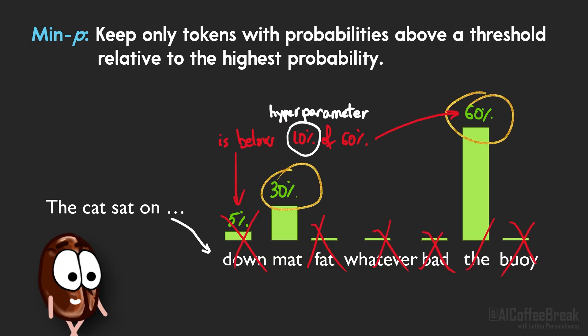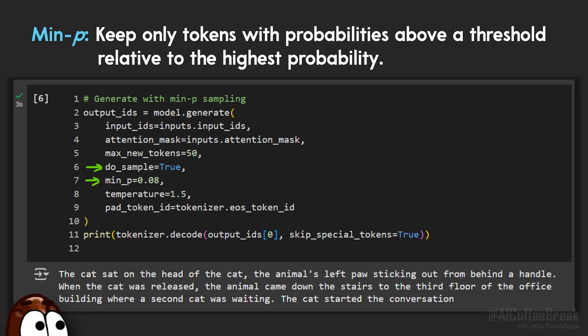So if the model is very confident, say one token has 60% probability, then only a few high probability options are kept, like in this example. But if the model is less certain and the top token has only 20% probability, then many other options pass the threshold. This means that min-p automatically tightens or loosens the sampling pool depending on how confident a model is, balancing coherence when it's sure and diversity when it's not. It's especially useful at high temperatures where other methods often get chaotic. That's why min-p has quickly been adopted in frameworks like Hugging Face and VLLM.